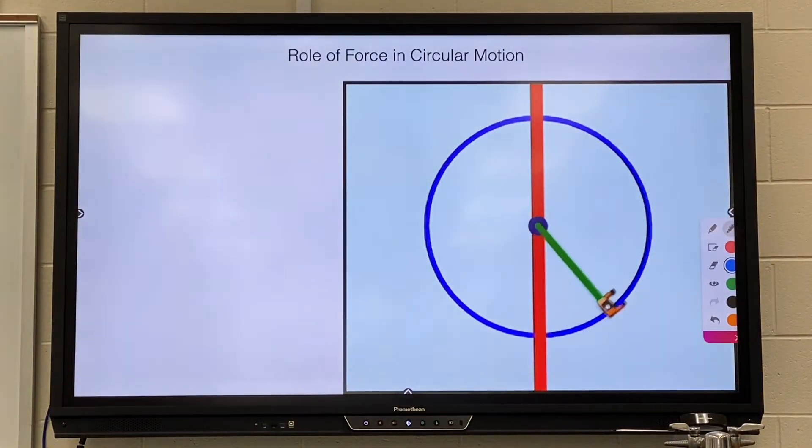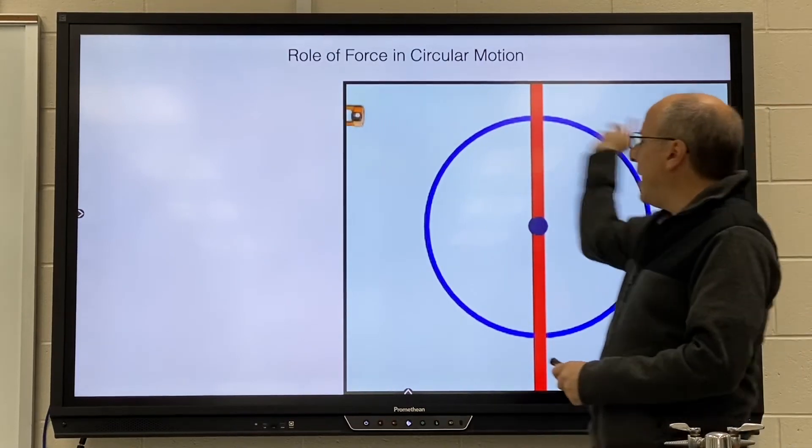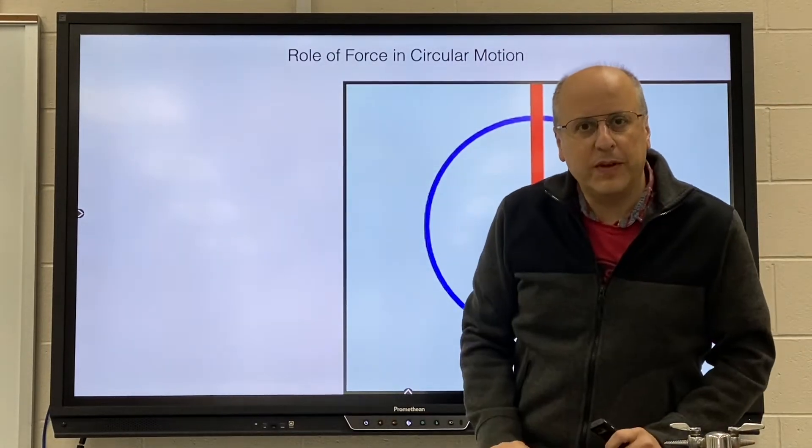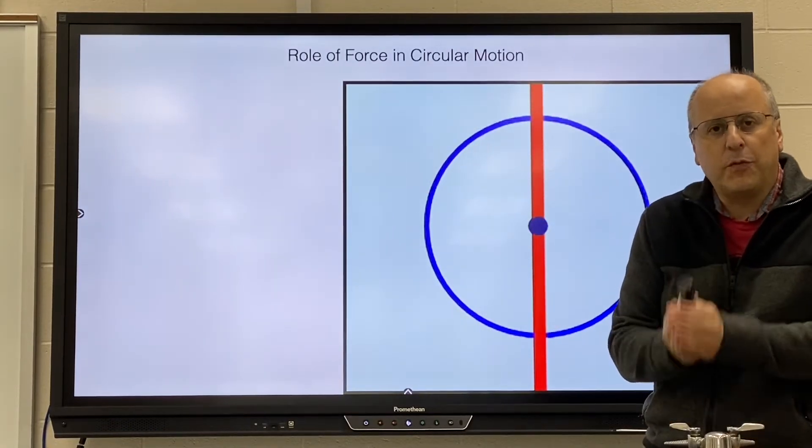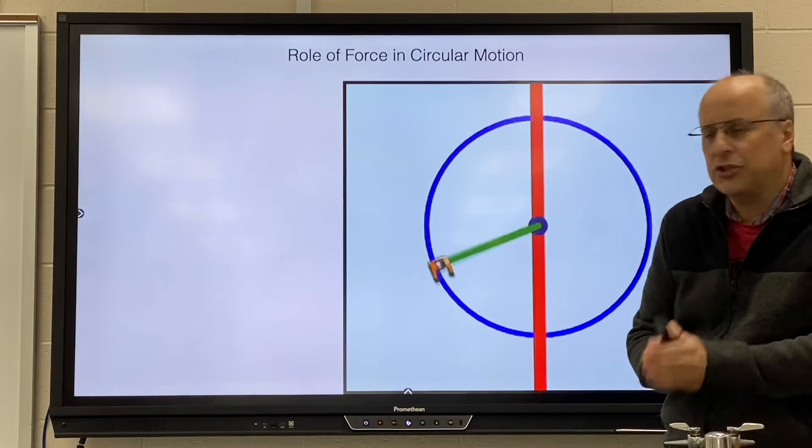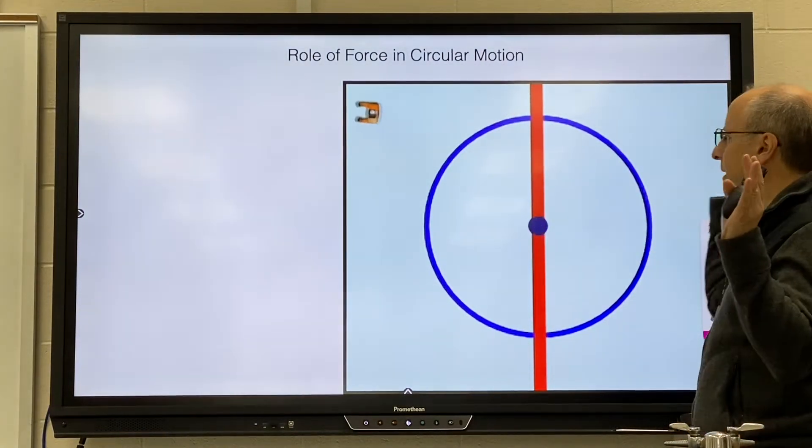Here's Newton's first law. We got an object moving in a circle. We take away the force, the object all of a sudden starts moving in a straight line. You can only move in a circle if there's a force pulling you out of that straight line. Take away the force, you take away the circle.